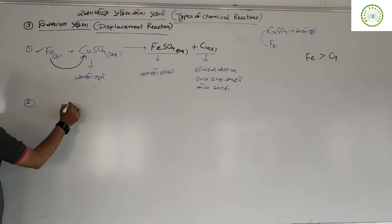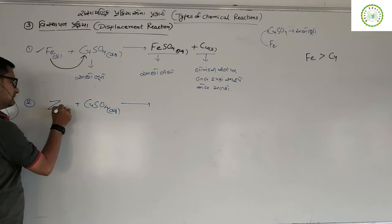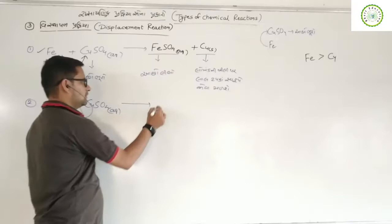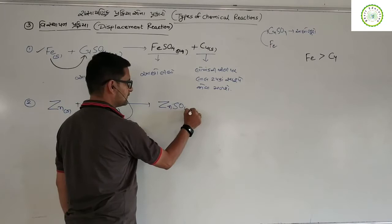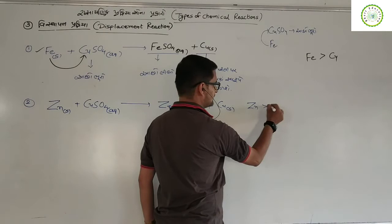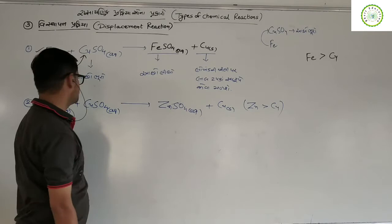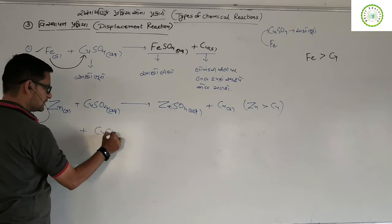The first thing is copper sulfate is not a dravan. We will be referring to the SO4. Zinc is greater than Cu. So we say Zn is greater than Cu. If you want to call it CuCl2, copper chloride aqueous, and if you want to call it Zn.